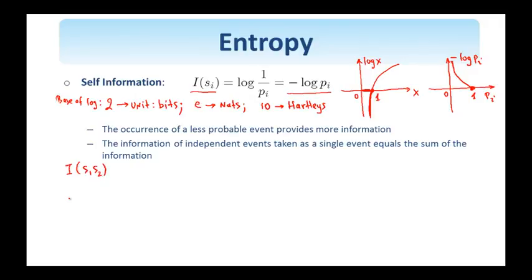the self-information of this event S1, S2 equals log 1 over the probability of S1, S2. And since the events are independent, this is equal to probability of S1 times the probability of S2.